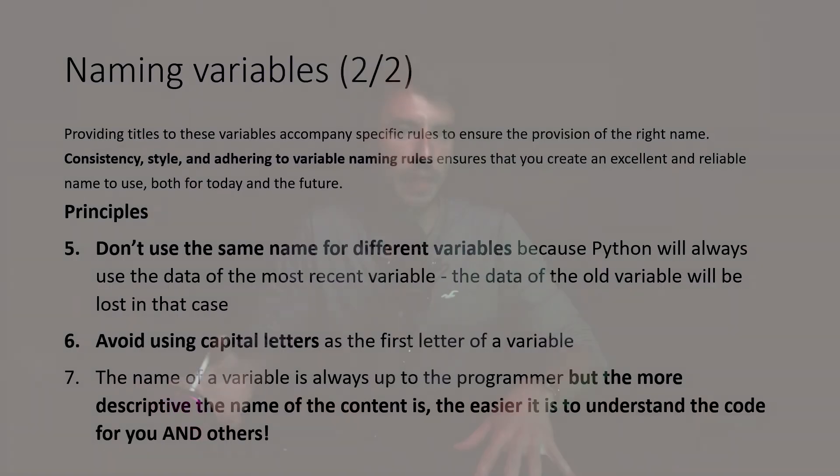For example, in real life, if I have some apples and I put them into an apple box, I should call it 'apple_box' and not 'peach_box'. The same principles apply to Python. Because in the end, if you write more complex code, it just becomes much easier for you if you already know what the content of a variable is just by looking at the name of it.